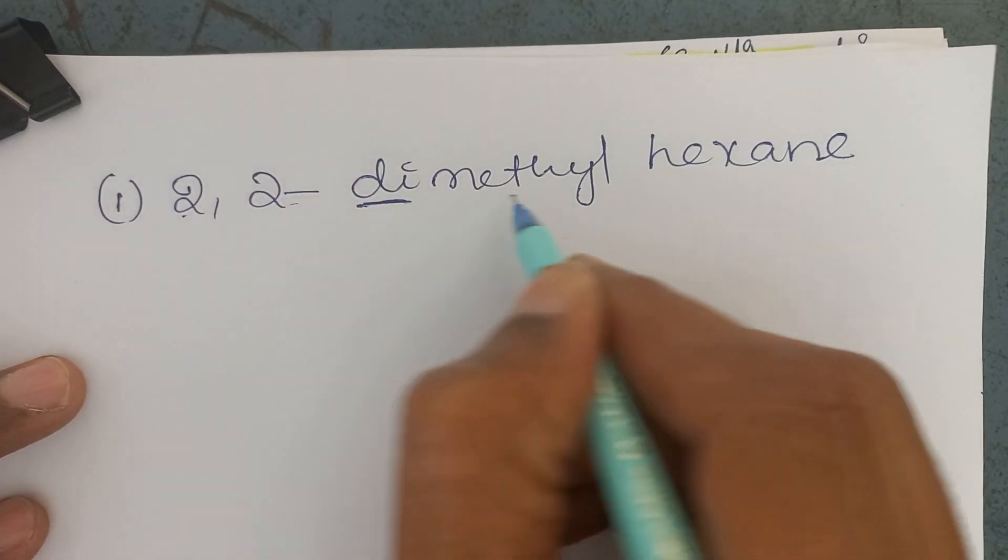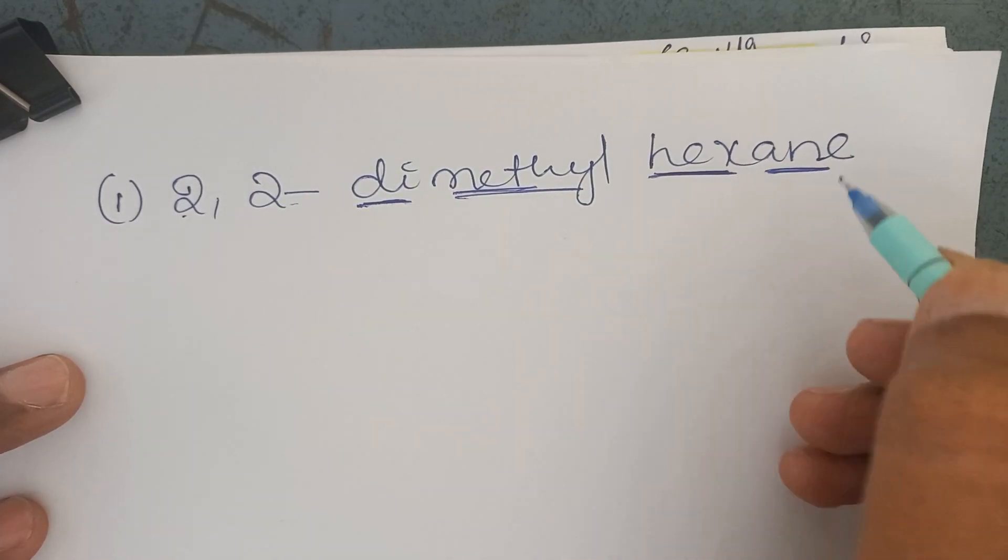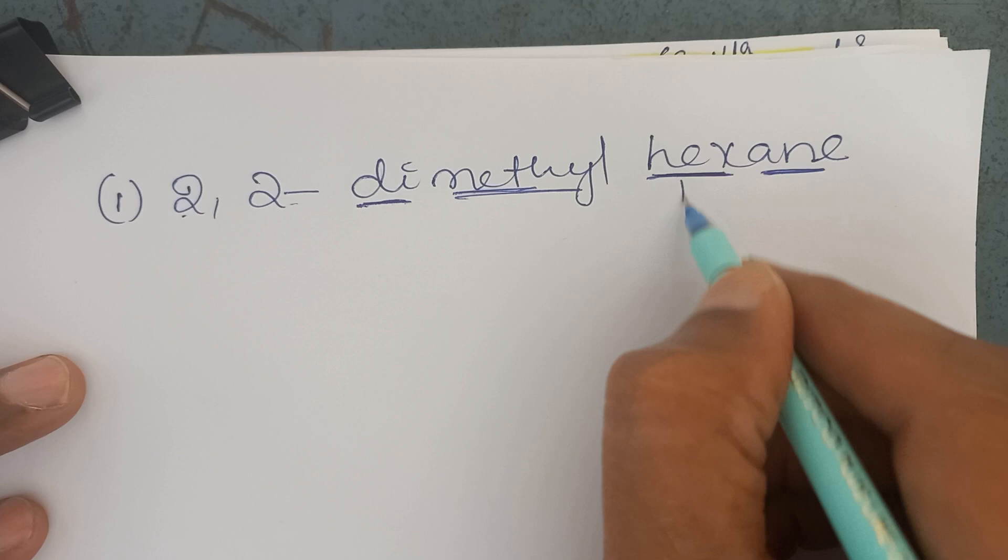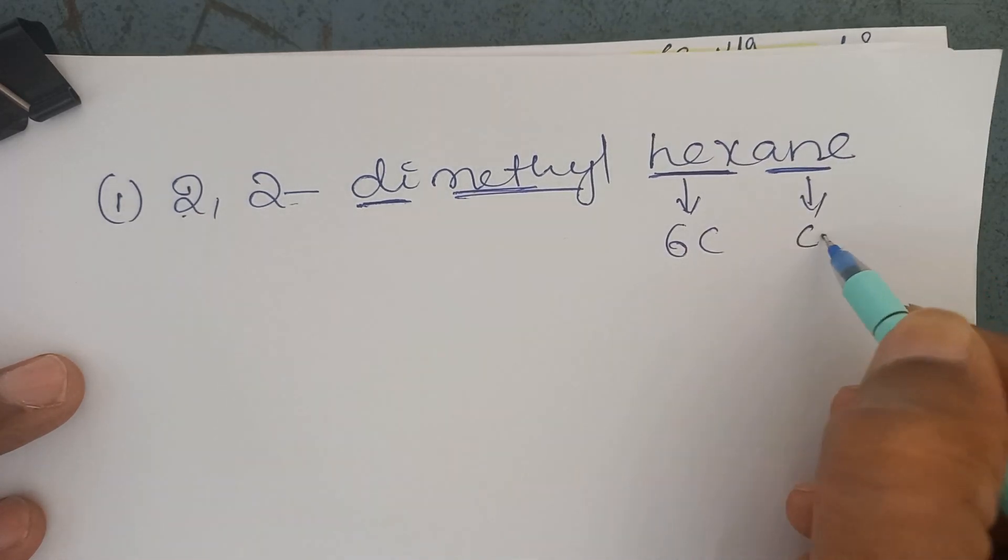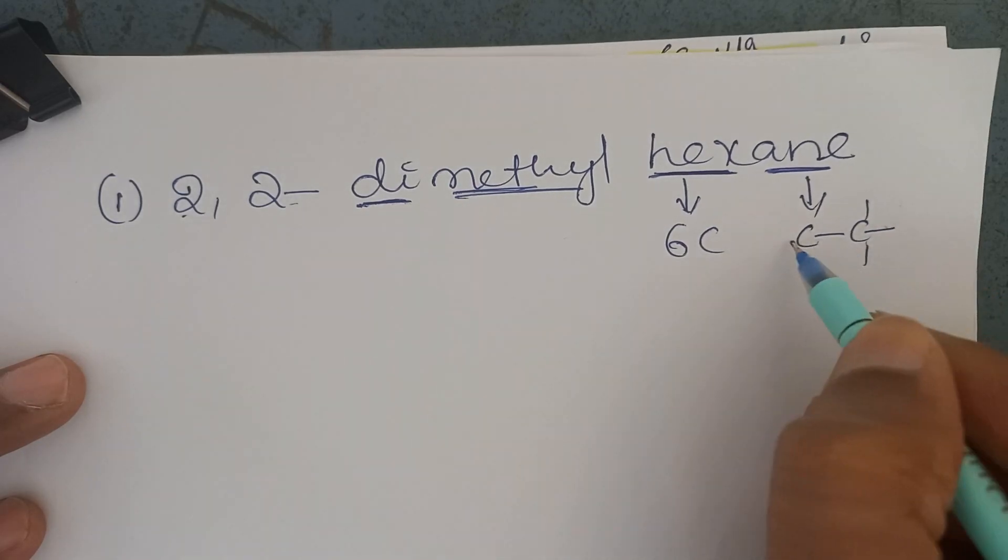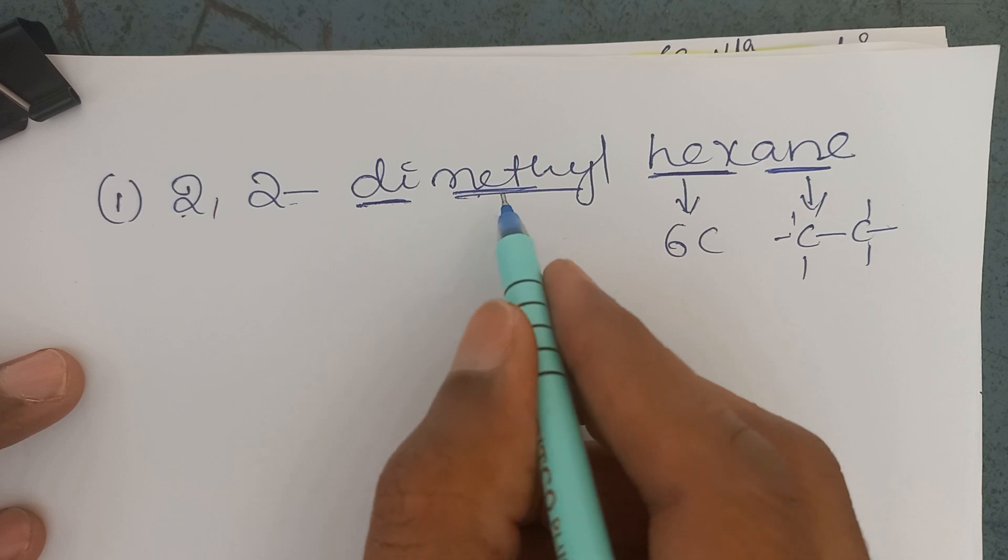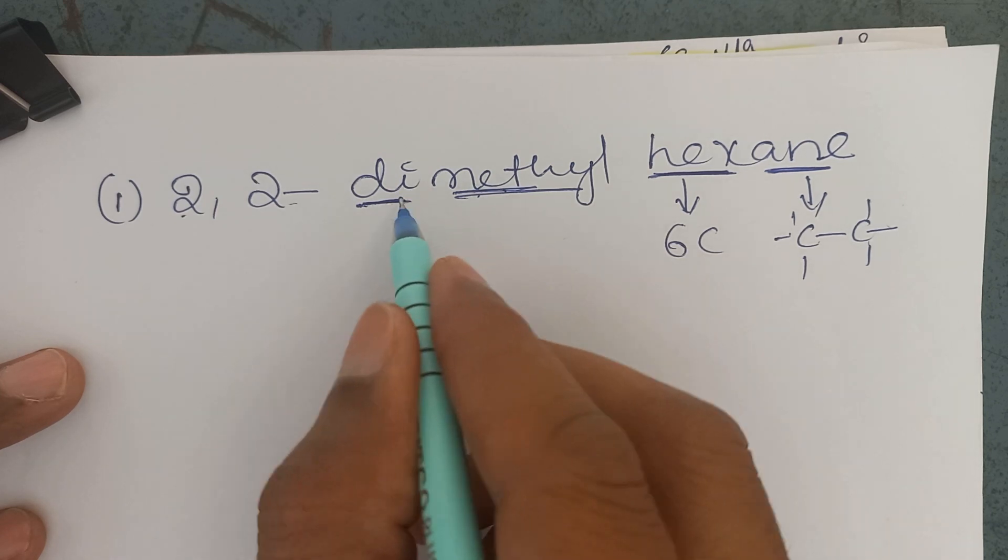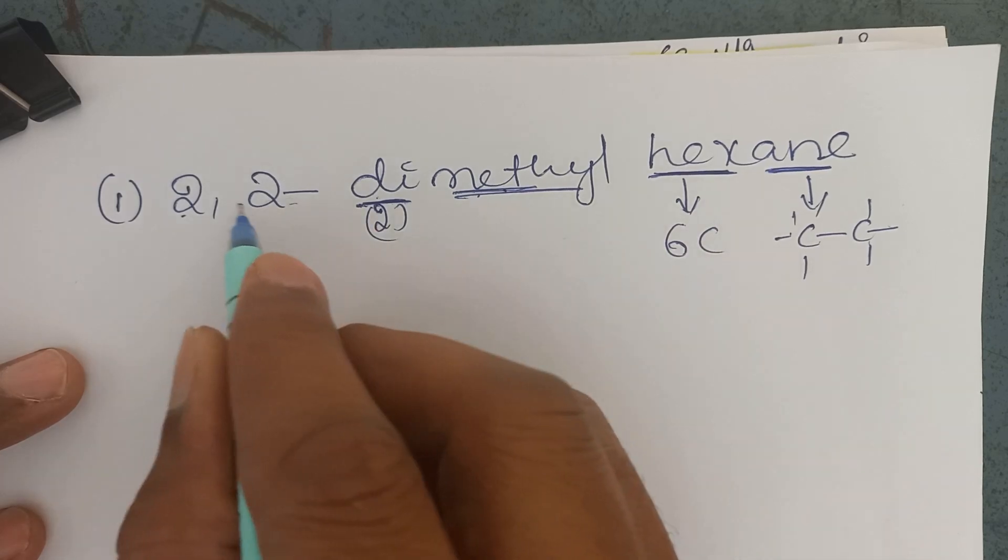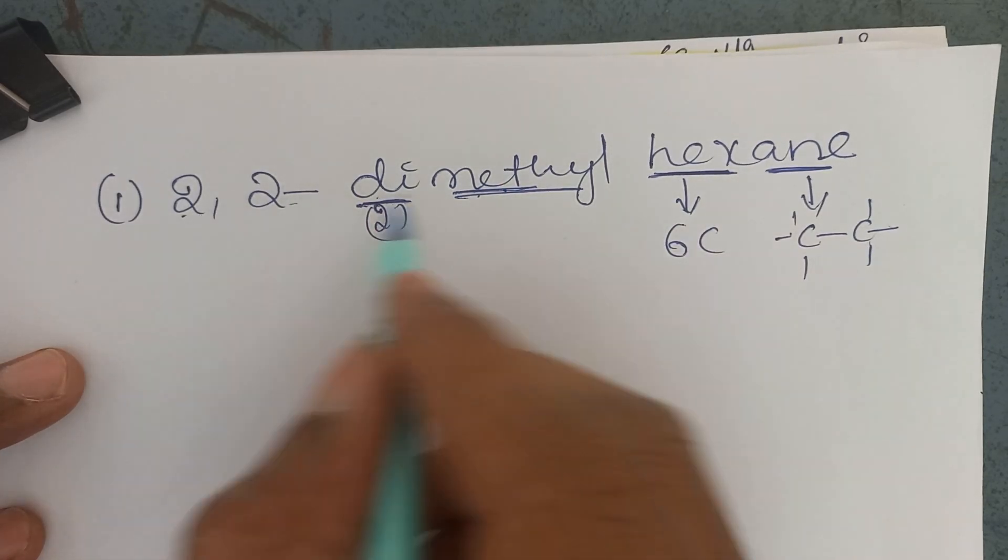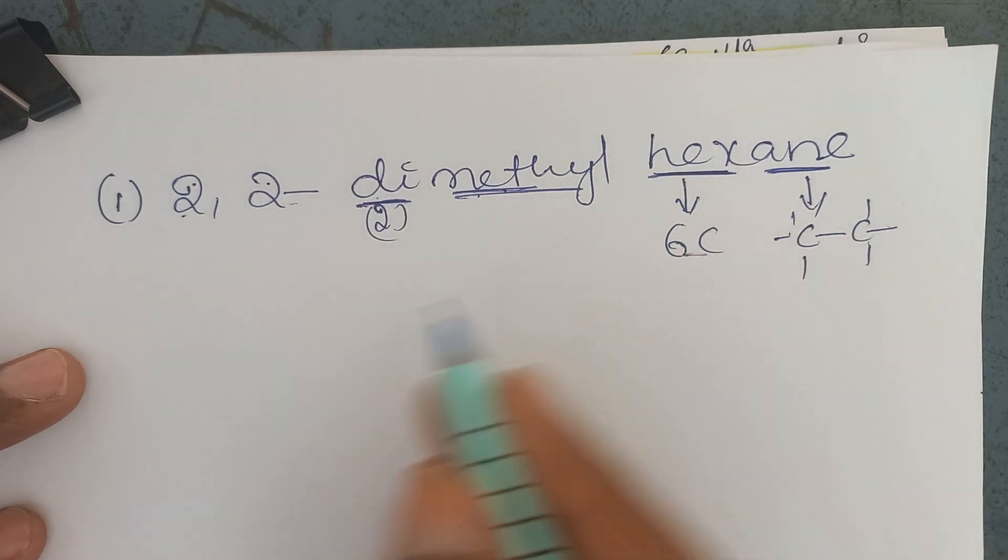2,2-dimethyl - two methyl groups. These are branches. Hex is the word root showing us 6 carbons. And this is ane - alkane means between the carbon atoms all are single bonds. And this is a branch, it is a prefix. Di means 2. So, 2 methyls, 2 methyls are attached to 2nd carbon.